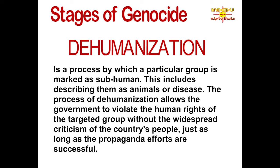As they state, classification and symbolization lead to genocide when they lead to the next stage, which is dehumanization. If used to dehumanize, symbolization is now considered a genocidal practice. The definition of dehumanization — the third stage of genocide — is a process by which a particular group is marked as subhuman. This includes describing them as animals or disease. The process of dehumanization often involves negative propaganda campaigns and allows the government to violate the human rights of the targeted group without widespread criticism, as long as the propaganda efforts are successful.